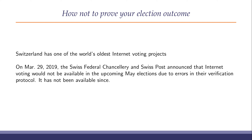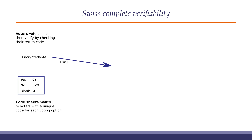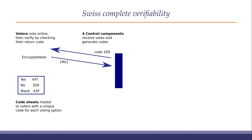In order to understand the story, you have to understand what they were trying to achieve. The system claimed to provide complete verifiability, and that works like this. Every voter gets a code sheet with a unique code for that voter for each possible choice, for each question they're going to be asked in the election. This is mailed on a piece of paper. They vote online, sending their encrypted vote to a central server. There are four control components which receive votes and generate the return codes.